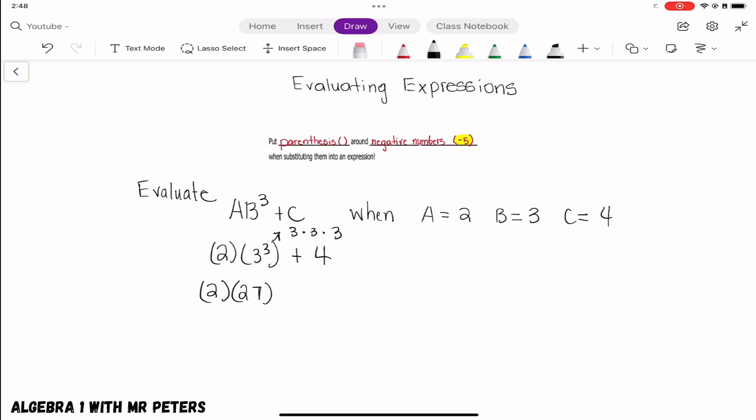After I do that I know that 3 to the third power is 27. And after I find that out, I'm going to multiply that 27 by 2 to get 54. And after I do that, now I could bring down my plus 4 and get a final answer of 58.